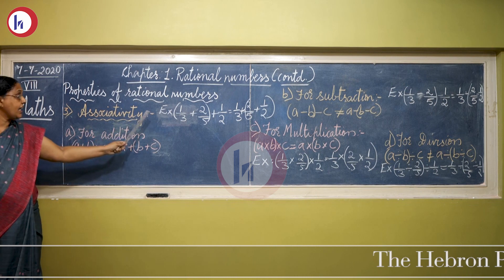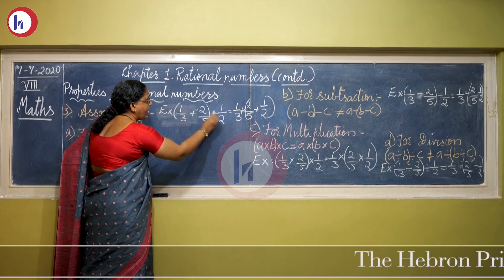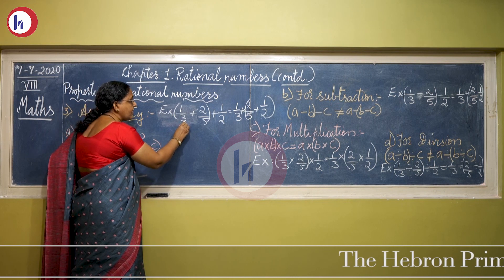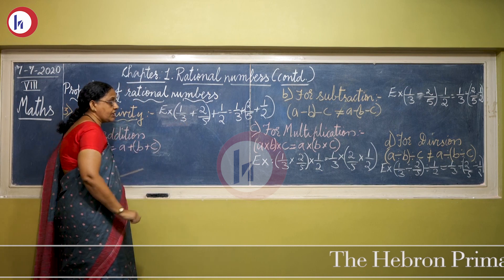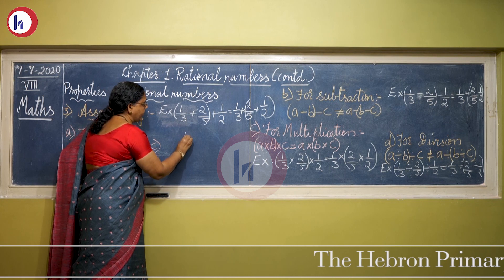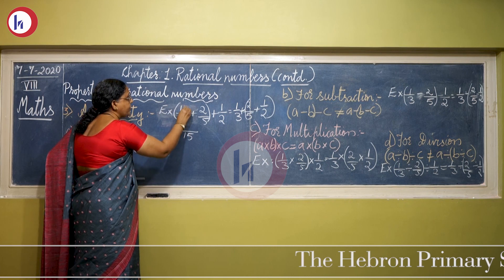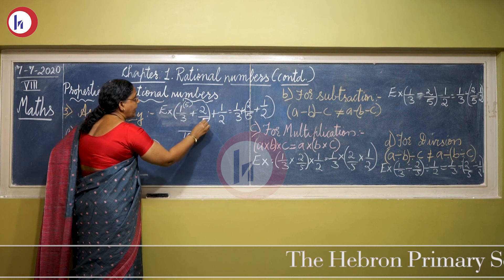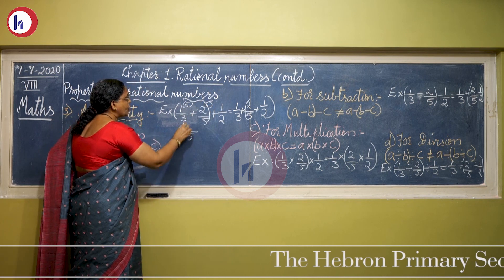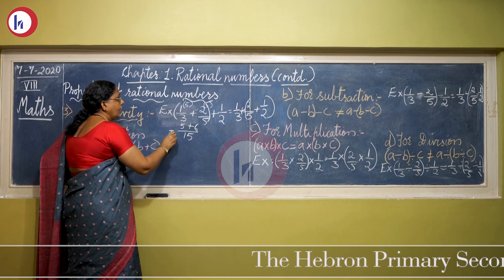We can verify it with an example. For example, (1/3 + 2/5) + 1/2. To add fractions we find the LCM of 3 and 5, which is 15. Making the denominators 15: 3 divides into 15 five times, multiply by 5; 5 divides into 15 three times, multiply by 3. So we get 5 + 6, which is 11/15.